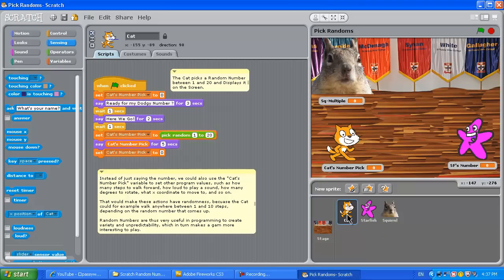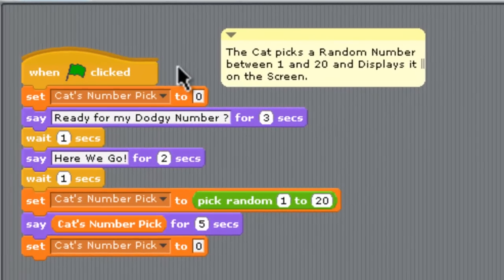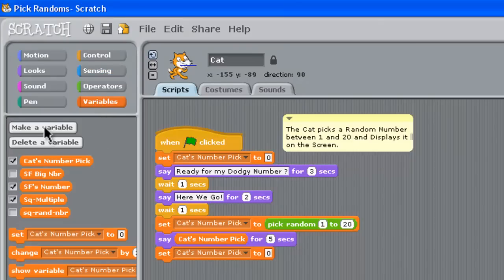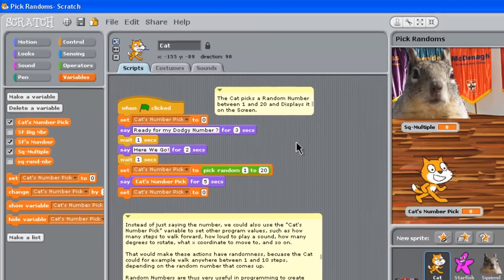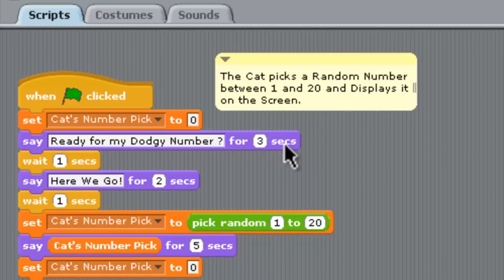Alright, so let's look at the cat sprite first and what happens with him. The cat sprite is set up to first off initialize his variable cat's number pick. So we just made that using variables and make a new variable and called it cat's number pick. We've clicked it here so it is shown on the screen as well underneath the cat. You would have seen that while the game was running. And with the script he just says you ready for the number, here we go.